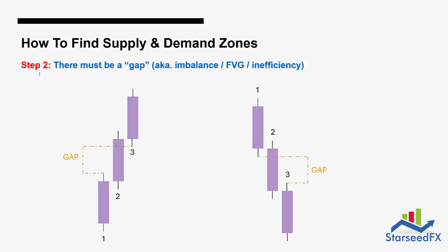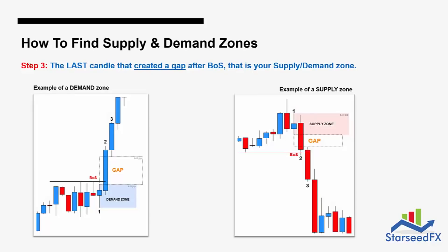The second step: there must be a gap — also known as imbalance, fair value gap, FVG, inefficiency, or whatever you call it. To me it's just a gap. This gap usually comes from three candles. To put it simply: one, two, three to the upside, or one, two, three to the downside. To find the gap, you look at the three candles and slash candle number two — imagine candle number two is gone. Then see: is there a gap between number one and number three? If there is a gap, it qualifies to become a supply or demand zone.